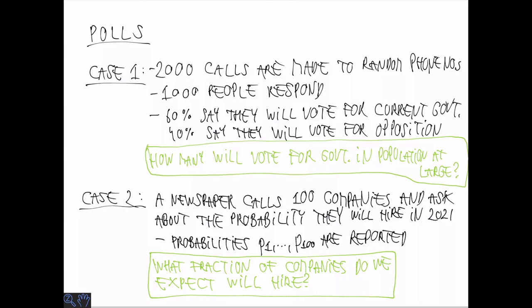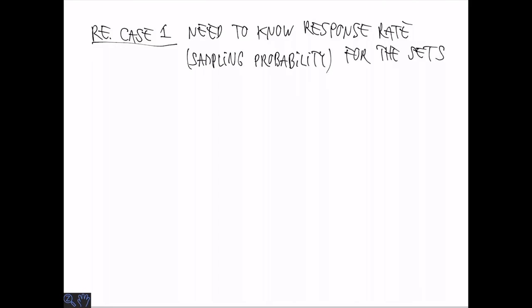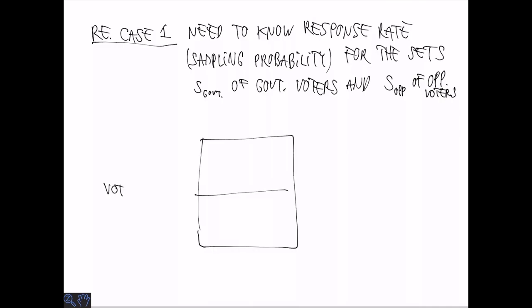Take a moment to think about these two questions. To say something about the first case, we need to know something about the response rates or sampling probabilities for the two distinct populations: S-government of government voters and S-op of opposition voters. Think about it like this. There are four categories depending on what they vote for and whether or not they respond.